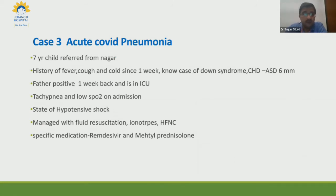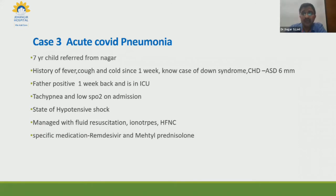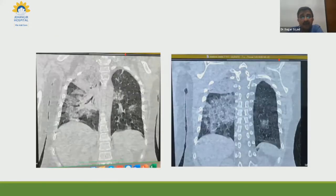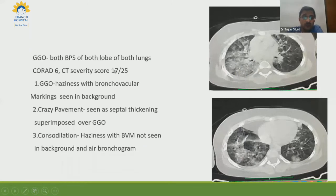The fourth case is acute COVID pneumonia with a different presentation requiring treatment escalation. This child had high-grade fever for almost one week and is a known case of Down syndrome with an underlying ASD of six millimeters. The father was COVID-positive and in the ICU. The child presented with tachypnea, low saturation, and hypotensive shock. Fluid resuscitation was done, inotropic support started, and HFNC was initiated. The CT severity score was 17.2 out of 25 — placing the child in the moderate-to-severe category with ground glass opacity and crazy paving pattern.